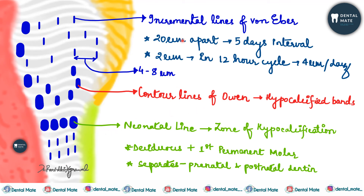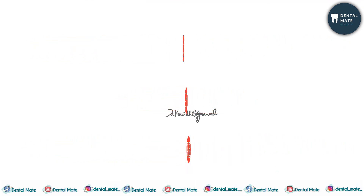Contour lines are accentuated incremental lines of Von Ebner — they are hypocalcified bands formed due to the coincidence of secondary curvatures, representing disturbance in matrix and mineralization. Neonatal lines are accentuated contour lines of Owen, also zones of hypocalcification, separating prenatal and postnatal dentine formation. They reflect the abrupt change in the environment at birth and are seen in deciduous teeth and first permanent molars. This is it about the incremental lines of dentine — stay tuned, thank you.